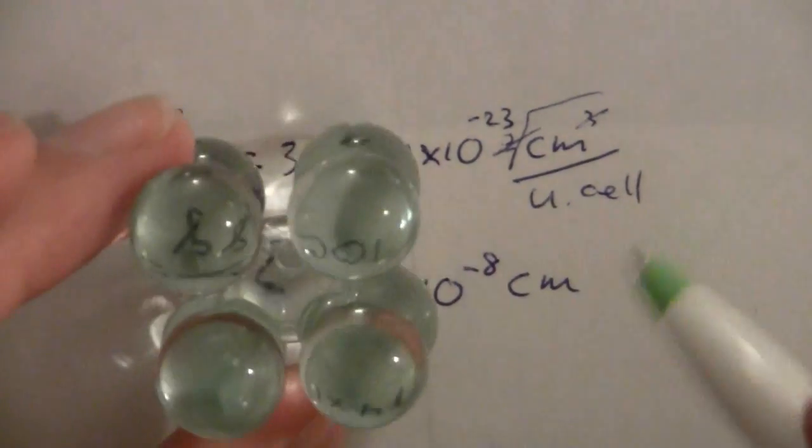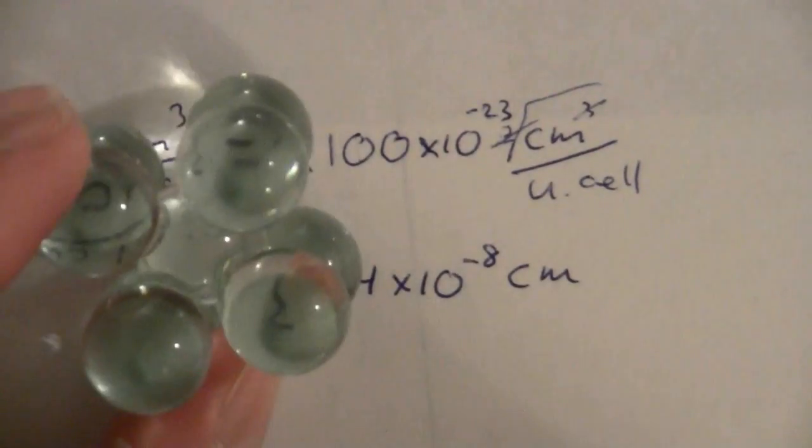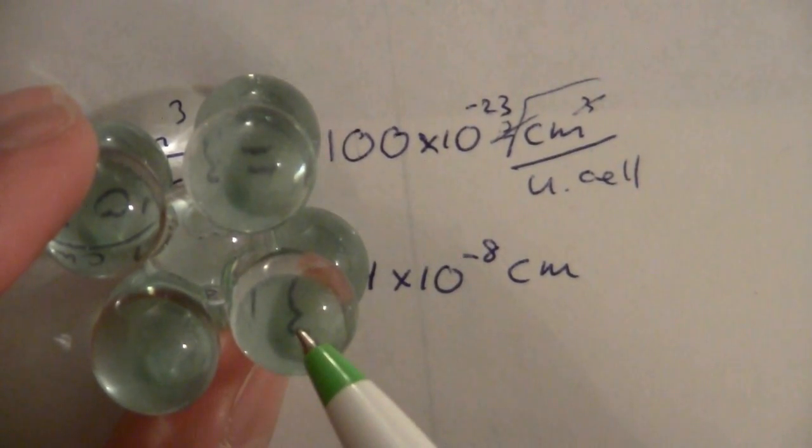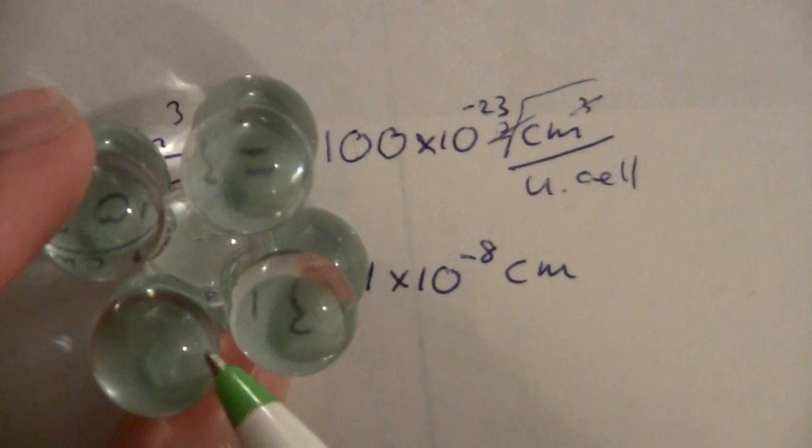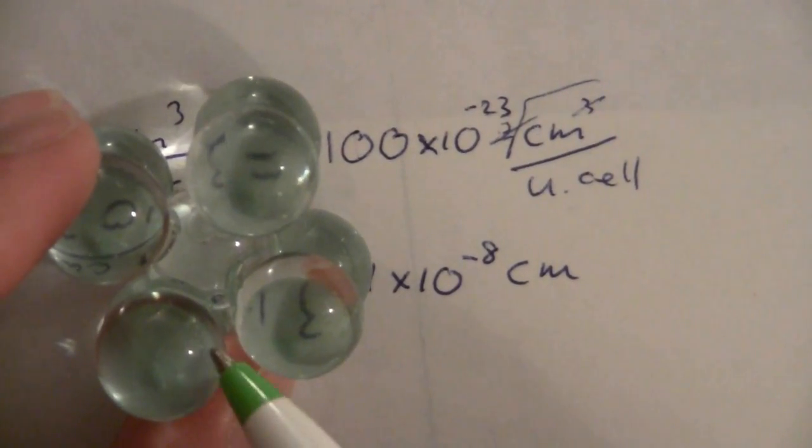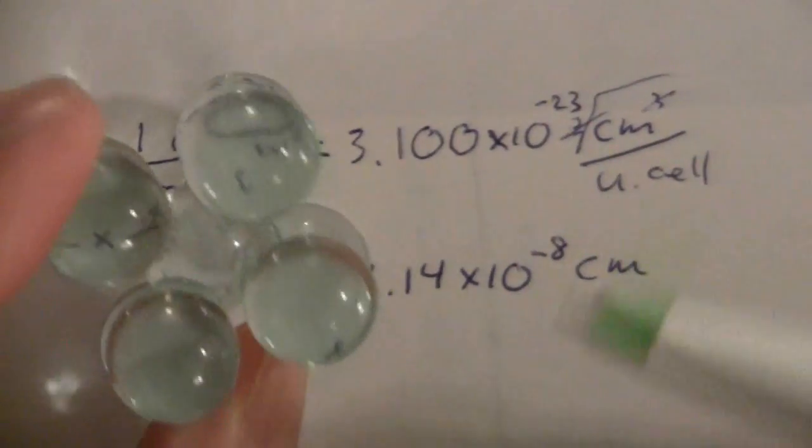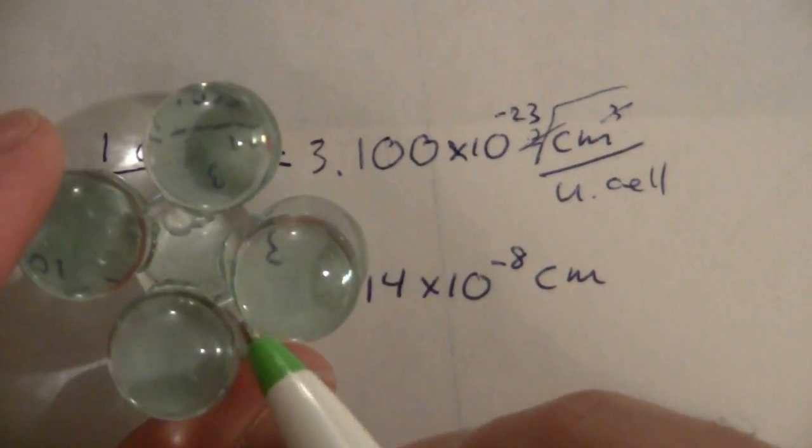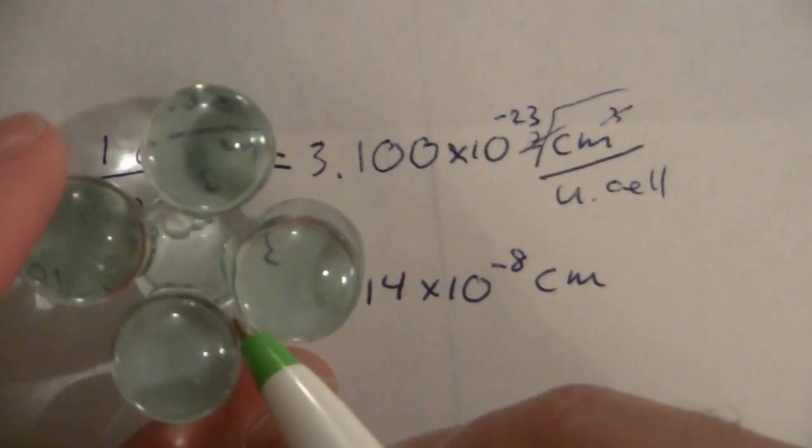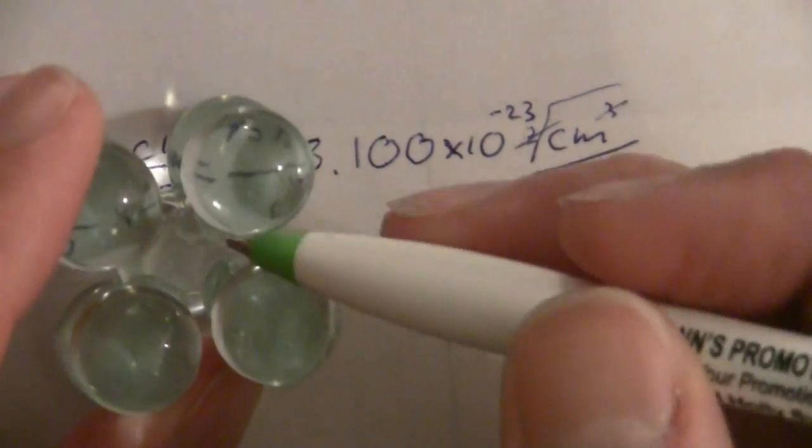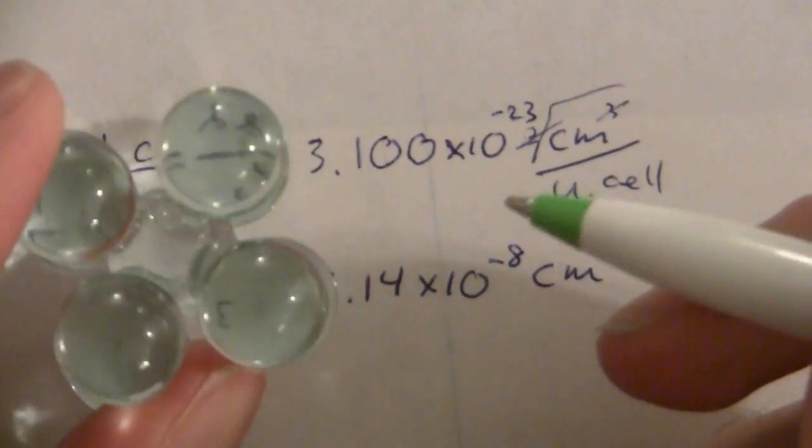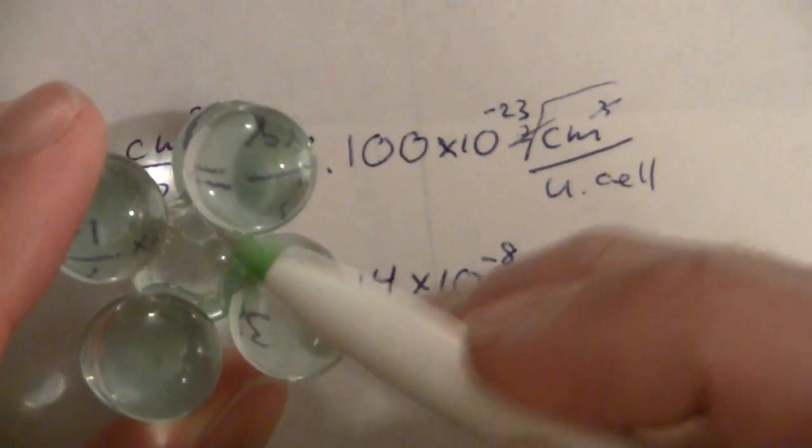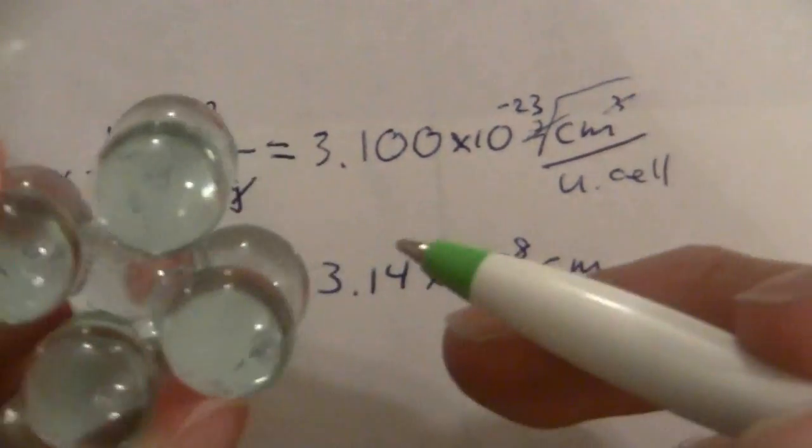So now I need to go from this length, that's this dimension right there, and find out what is the radius of this atom. Now, it's not directly just dividing that by 2 because I have a little gap there and I don't know how far that is. Furthermore, I can't go this way because I also have a gap there and I don't know how far that is.